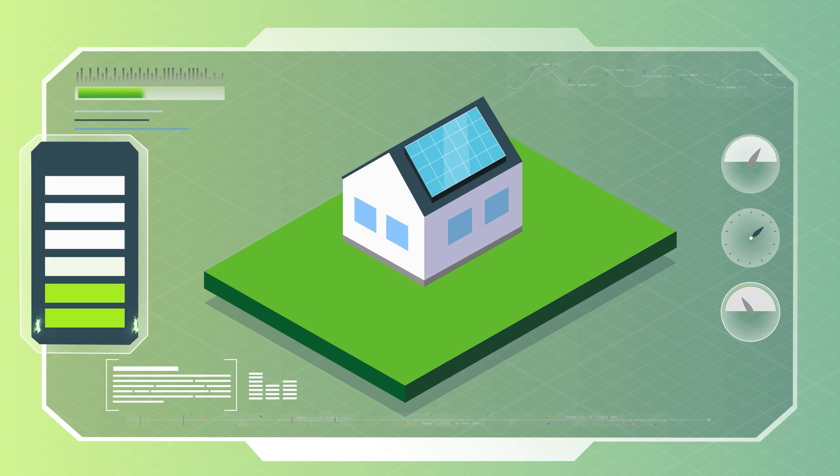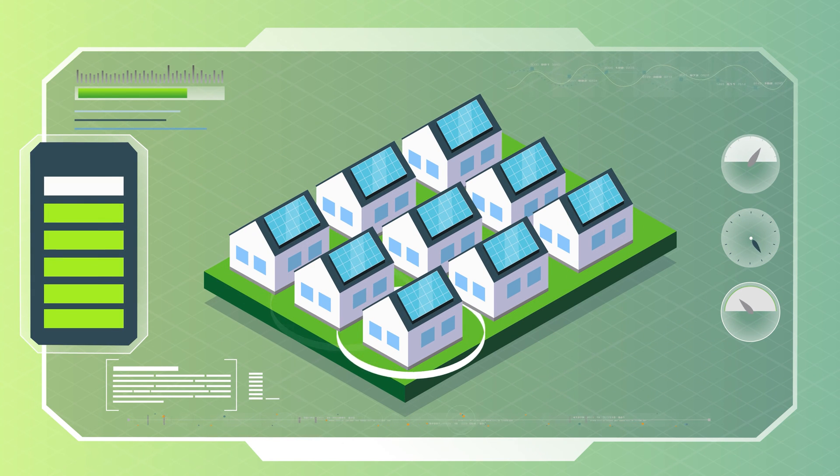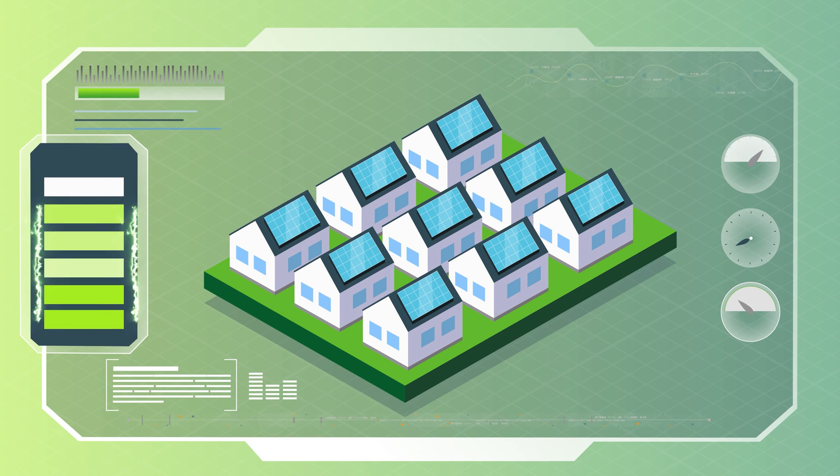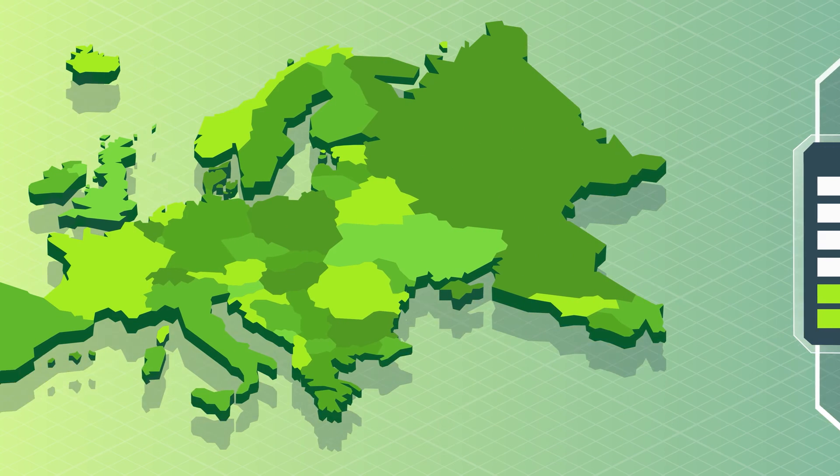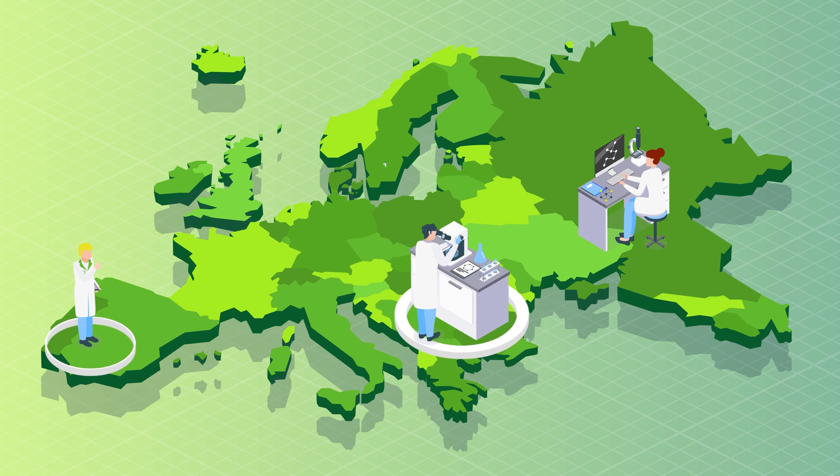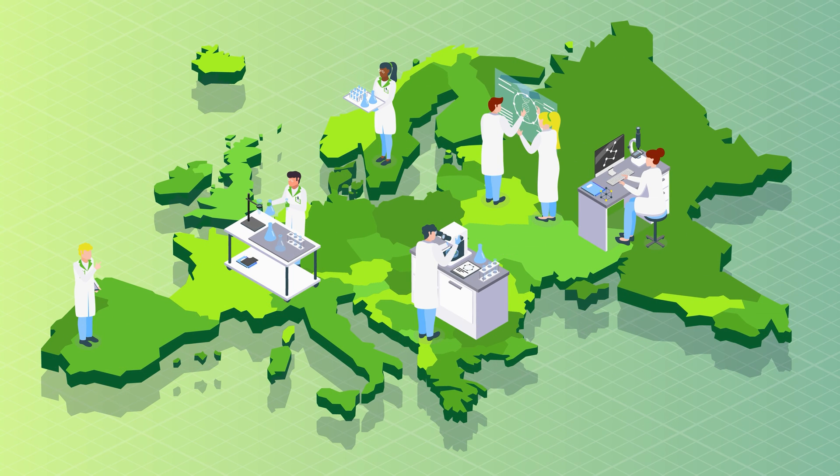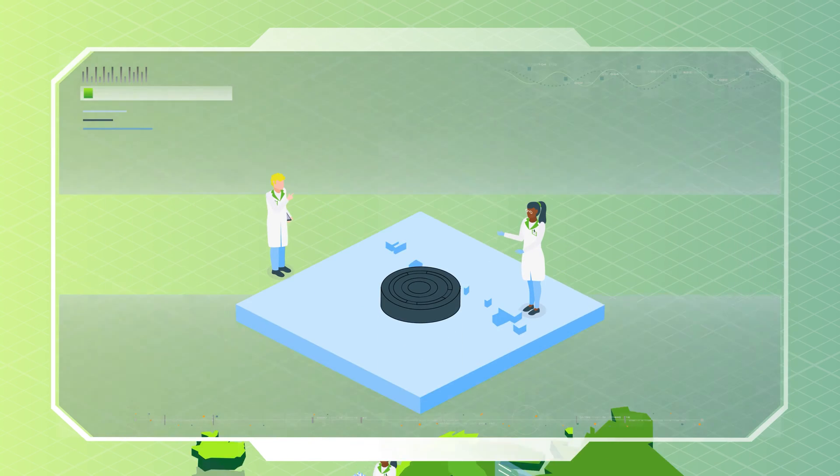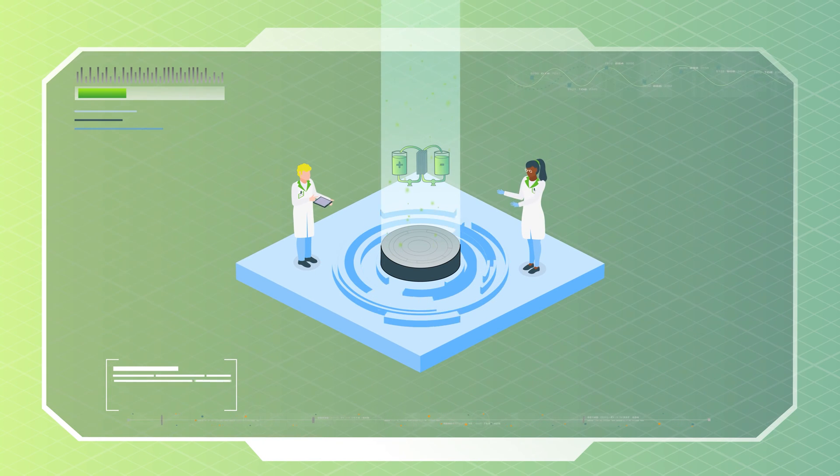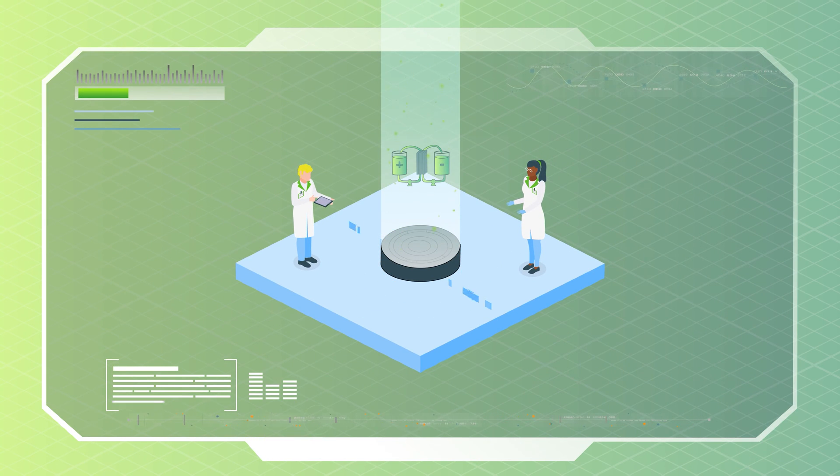But as the world's energy demand increases, improving energy storage has become a major challenge. The Mi battery project unites researchers from across Europe and aims to address this challenge by developing a sustainable and high-performance biphasic redox flow battery.